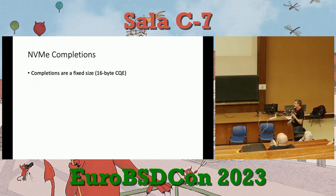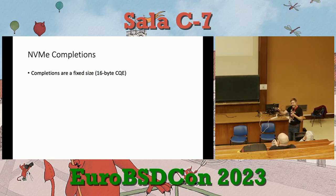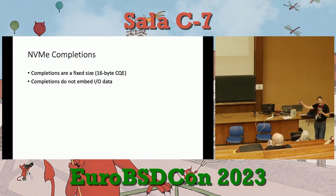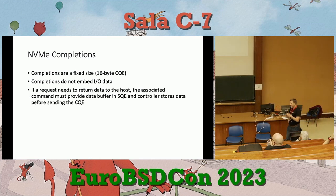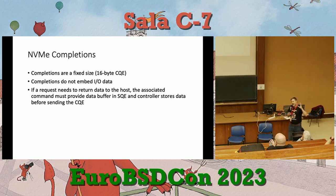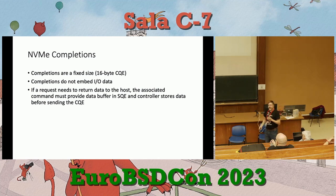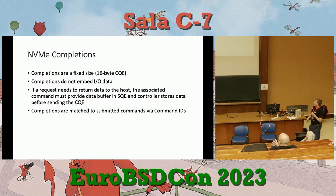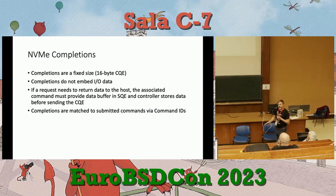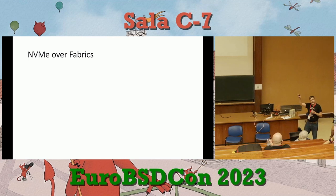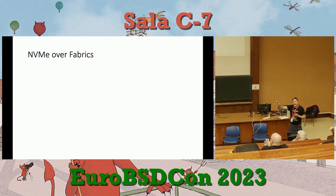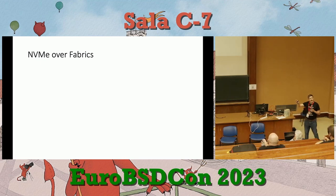Completions are a fixed 16-byte structure and do not contain any data. If you're doing a read, you provide a scatter-gather list describing the buffer in the original command, and the controller sends the data to that location. When done, it sends a completion entry. So data is sent before the completion, and command IDs are used to match up commands with completions since completions can arrive out of order.